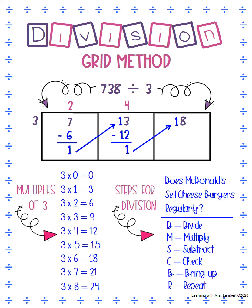And now we repeat again. 3 goes into 18 six times. 6 times 3 is 18. Subtract: we get 0, which is smaller than 3, and that means we have no remainders — so we are done. 738 divided by 3 is 246.